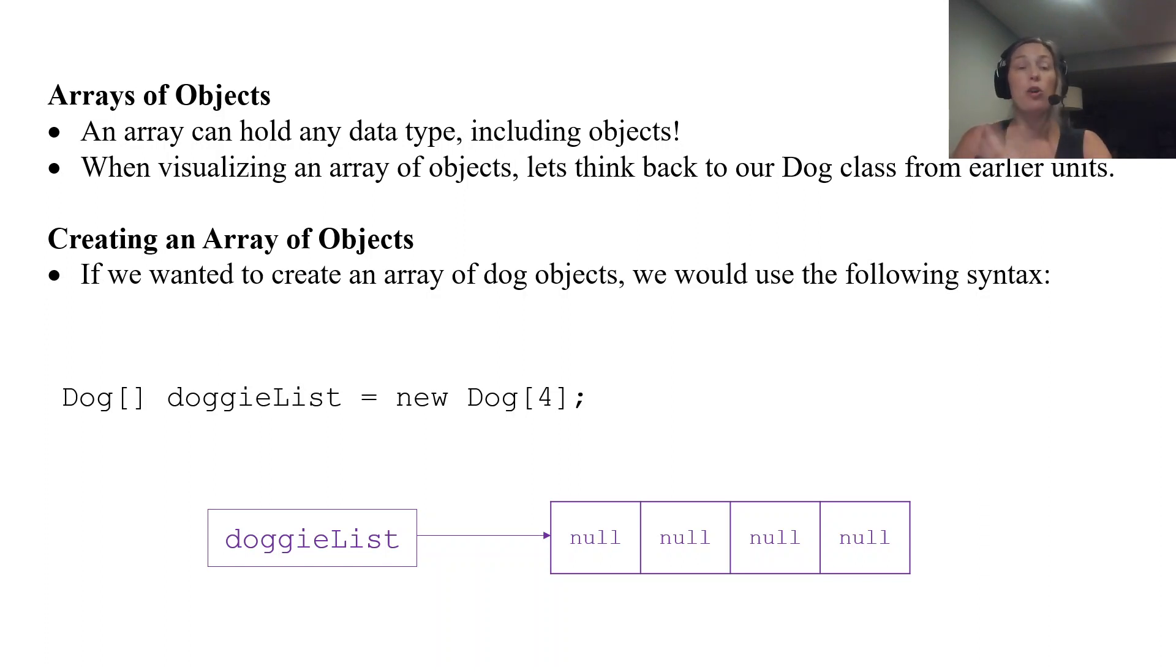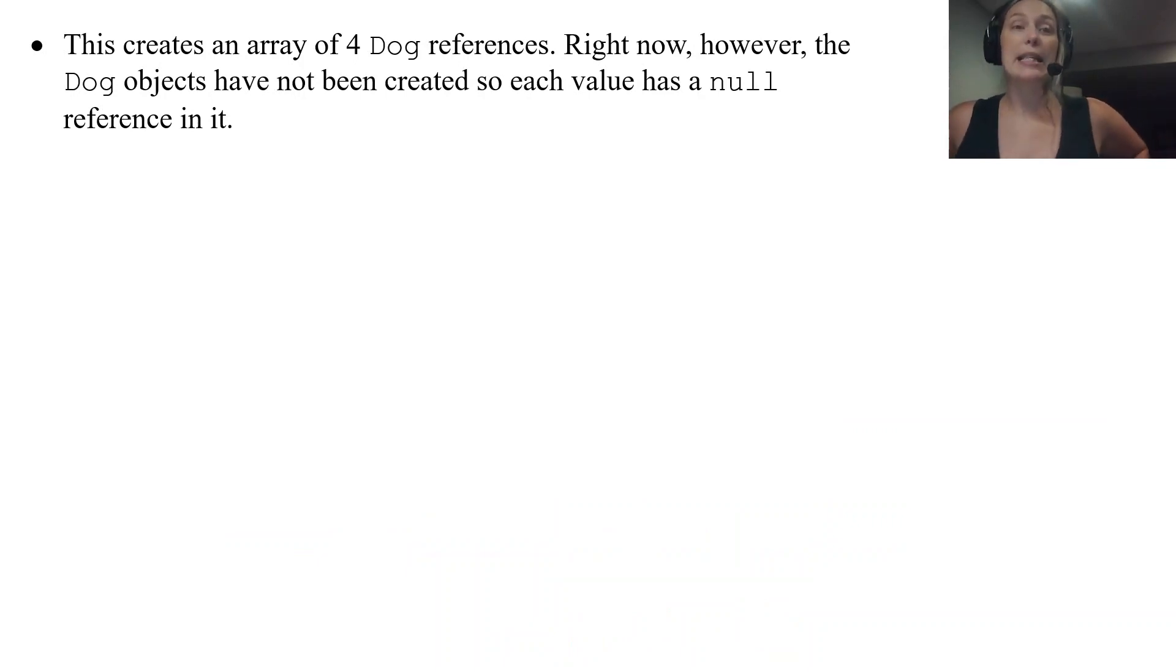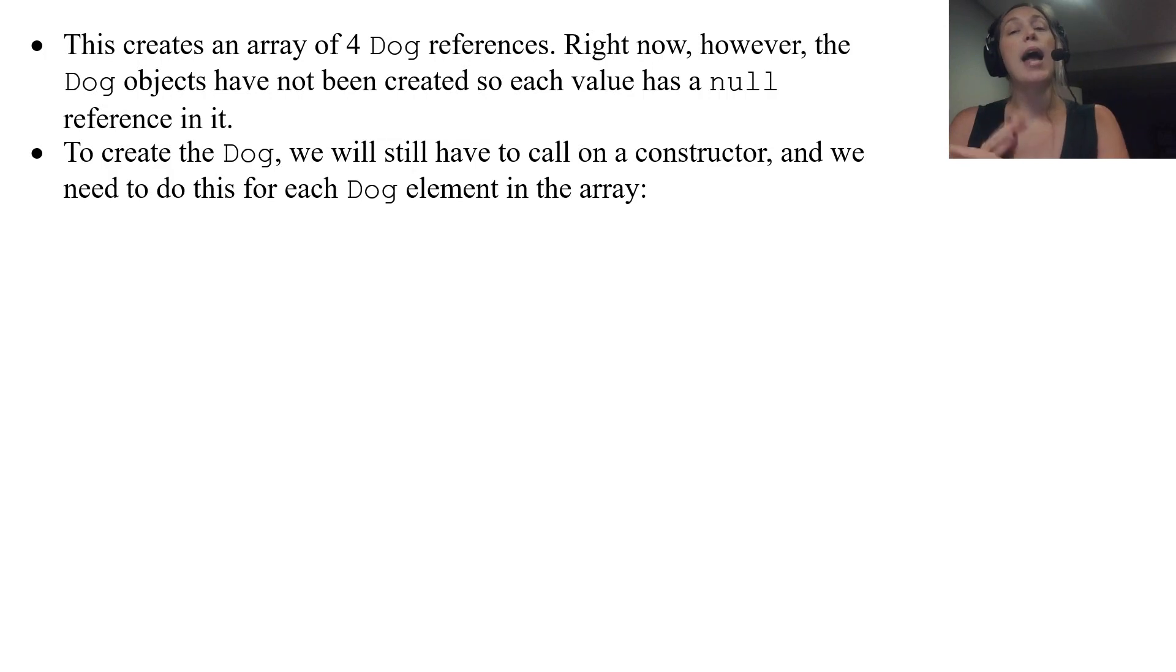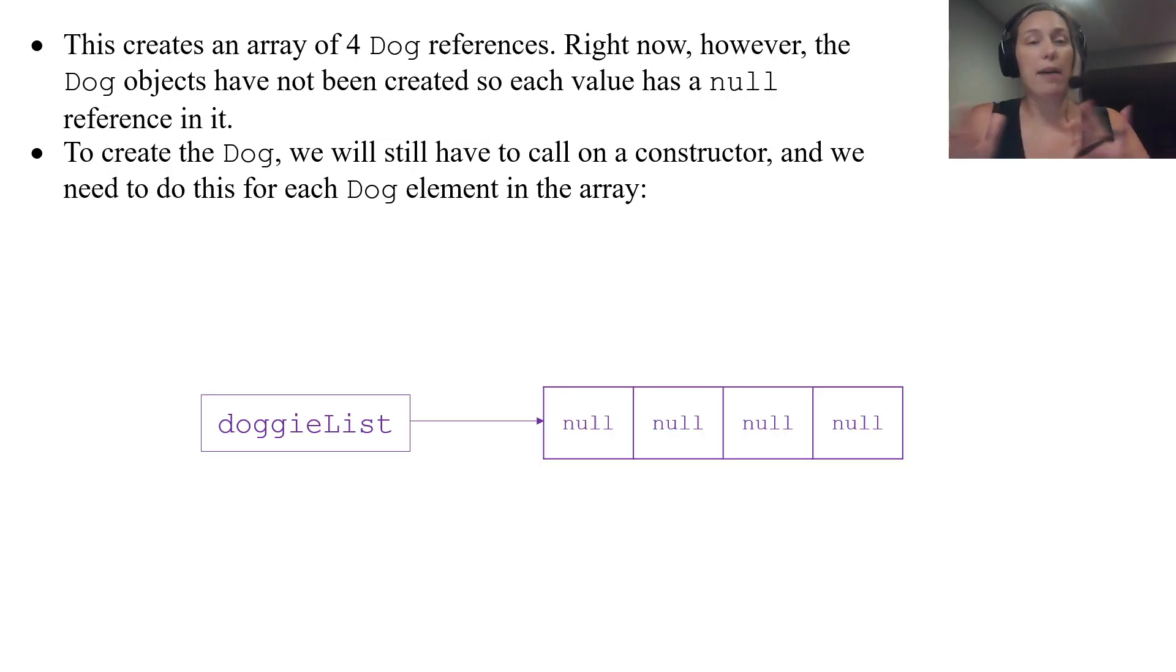no Dog objects have been created. You have created an array that has the ability to hold dog objects, but currently it is not holding any dog objects—it is all null. So if I tried calling doggieList[1] and I tried to reference the first index, I would get a null pointer exception, meaning it's null. You can't work with a null reference. No dogs have been created. To create a dog, you still have to call a constructor. That's the only way you can create objects—by calling a constructor. So for each dog element in the array, you have to call a constructor.